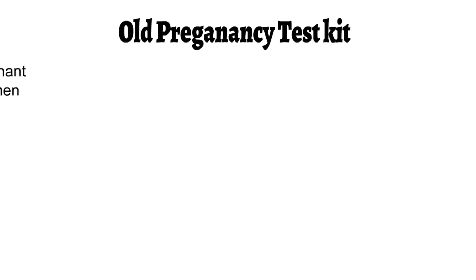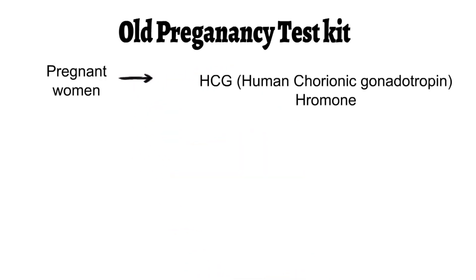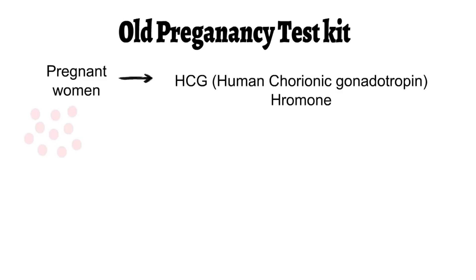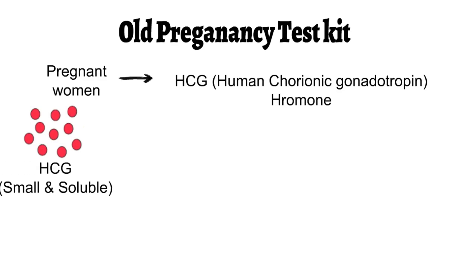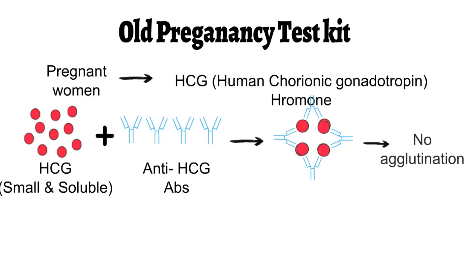The principle of the agglutination inhibition test was used in older pregnancy test kits. Pregnant women secrete a hormone called HCG — human chorionic gonadotrophin — in their urine. HCG is a very small and soluble molecule. It is also referred to as a hapten in many books, since it is antigenic in nature but not immunogenic. As a hapten, it will not show agglutination reaction with its specific antibodies because it is a small and soluble antigenic molecule.